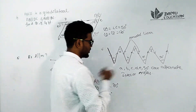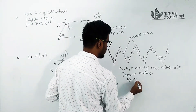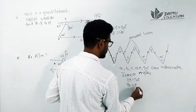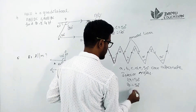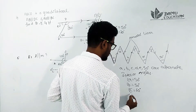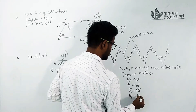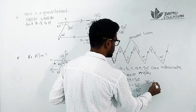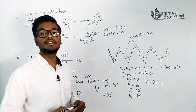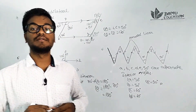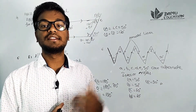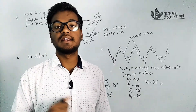So angle A equals 50 degrees, angle B equals 50 degrees, angle C equals 50 degrees, angle D equals 50 degrees, and angle E equals 50 degrees. Thanks for watching this video. If you want more videos, please subscribe and give a thumbs up.